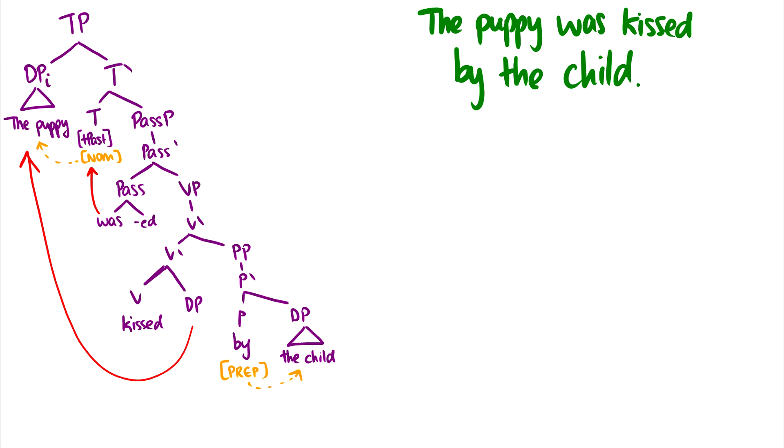So we can even look at this with another sentence, the puppy was kissed by the child. Some things I note here are that we already have the puppy, which is the theme being kissed, moving up to spec TP to get nominative case. And we've introduced by the child as an adjunct to kissed, because this is optional. Therefore, we should be treating it as an adjunct.